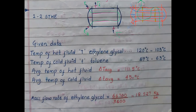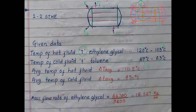From the given data: identify the hot fluid — temperature of hot fluid is always represented as capital T. Ethylene glycol is the hot fluid: T1 = 120°C, T2 = 103°C. Toluene is the cold fluid represented as small t: t1 = 27°C, t2 = 63°C. To avoid a negative sign, always write the higher temperature as T1 and the lower as T2.